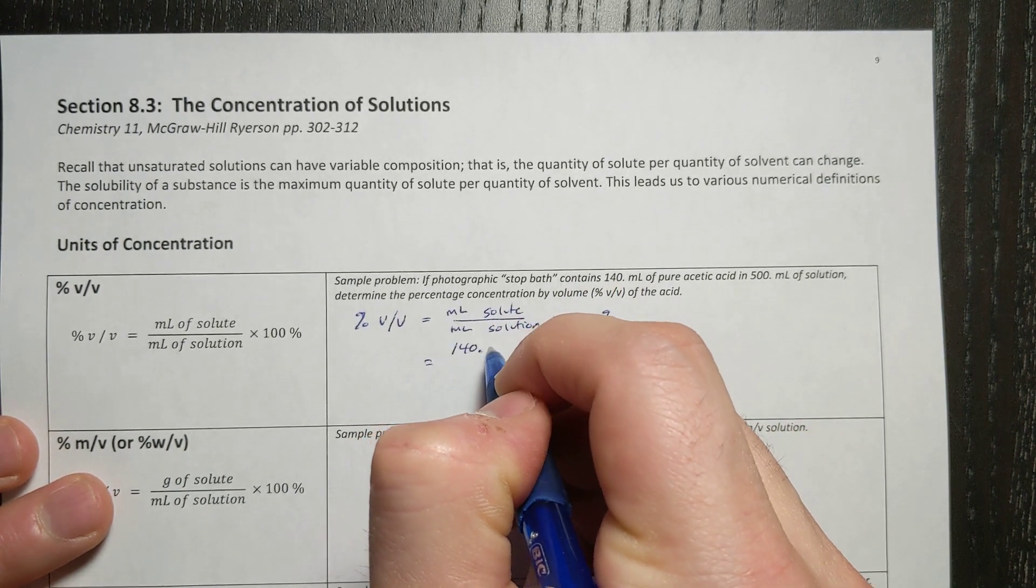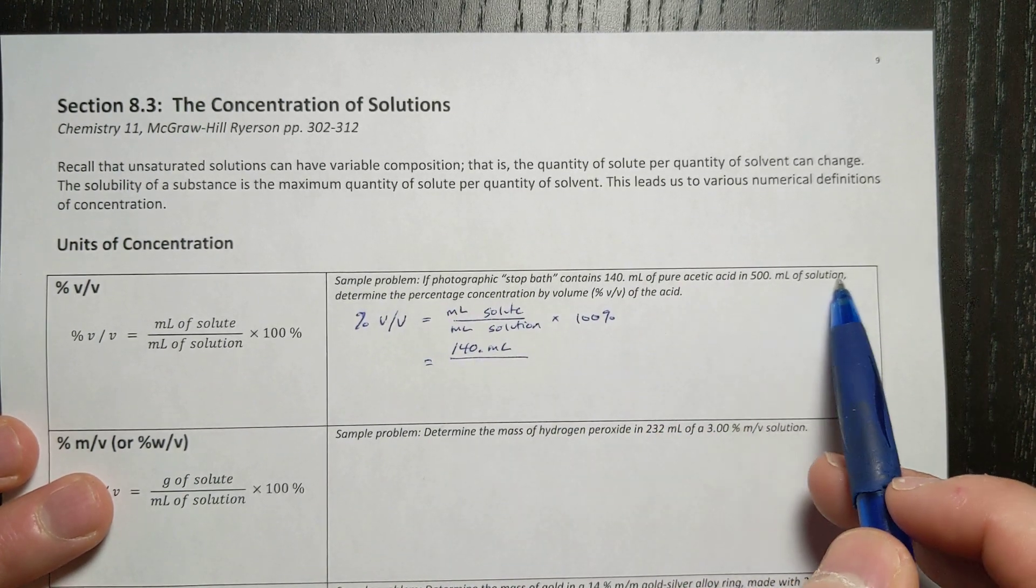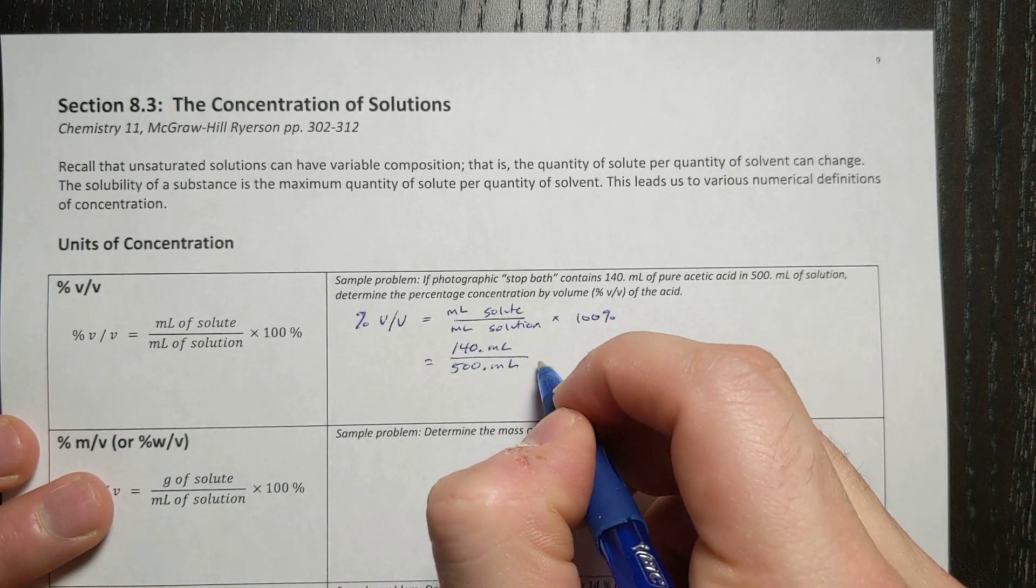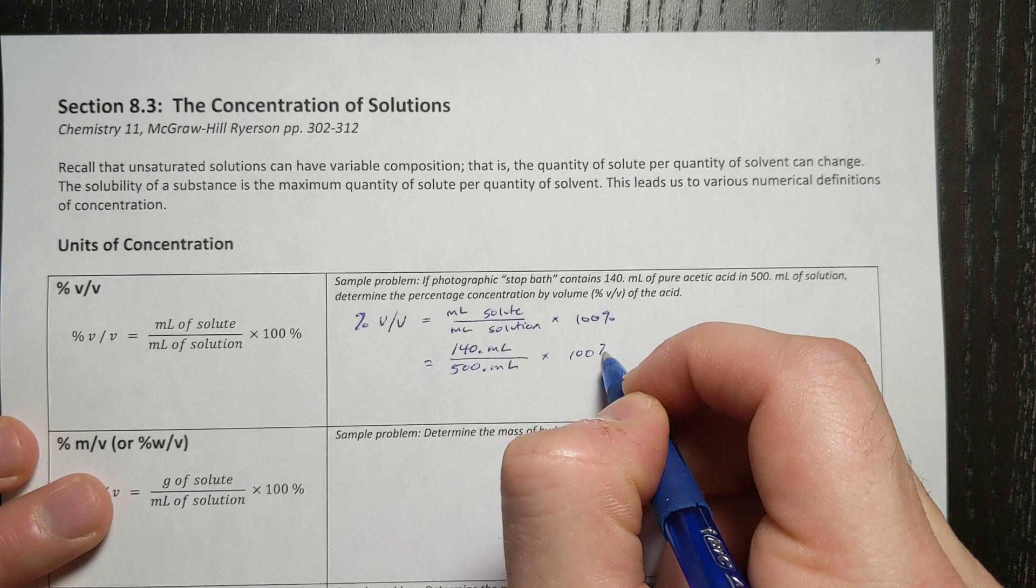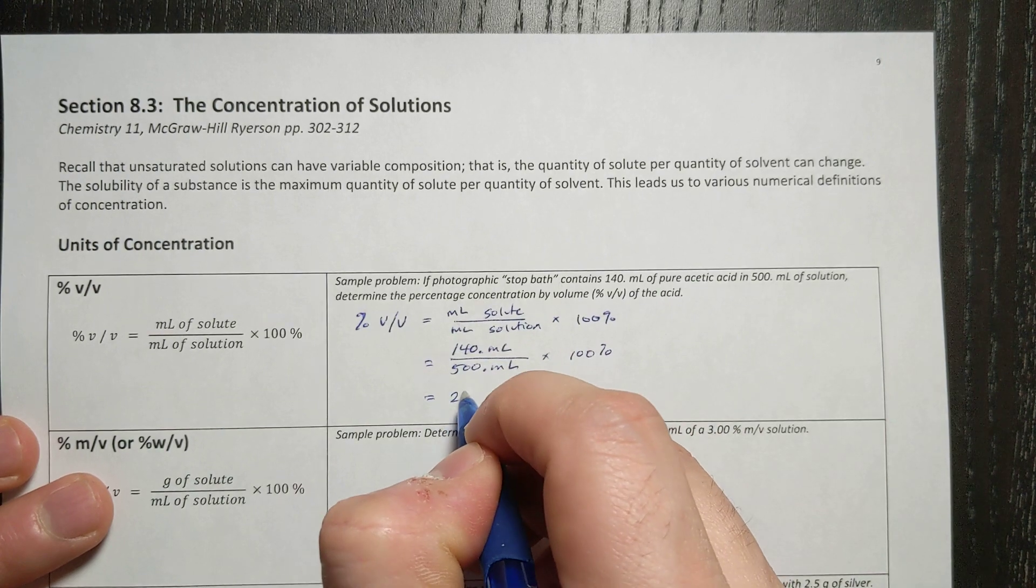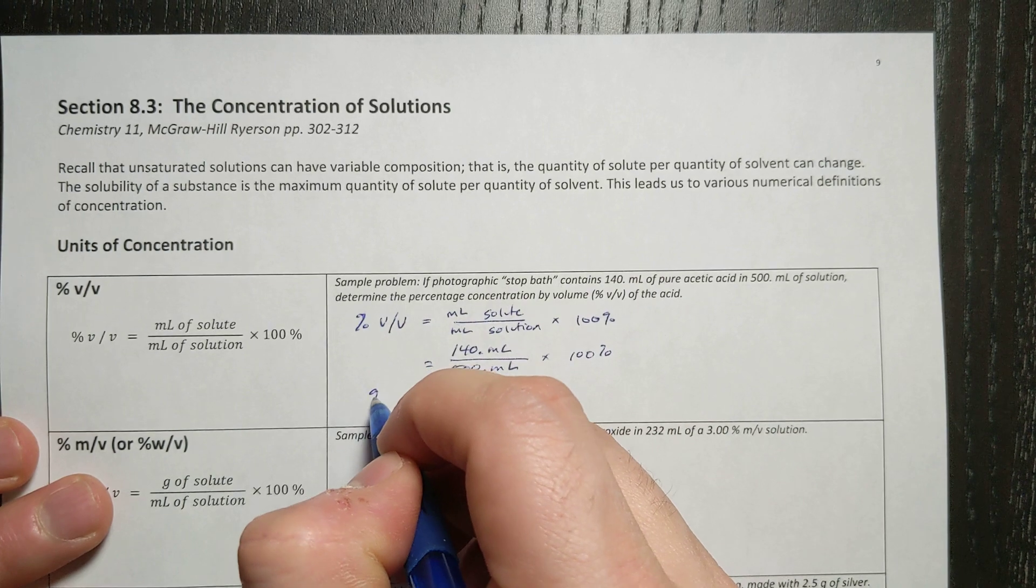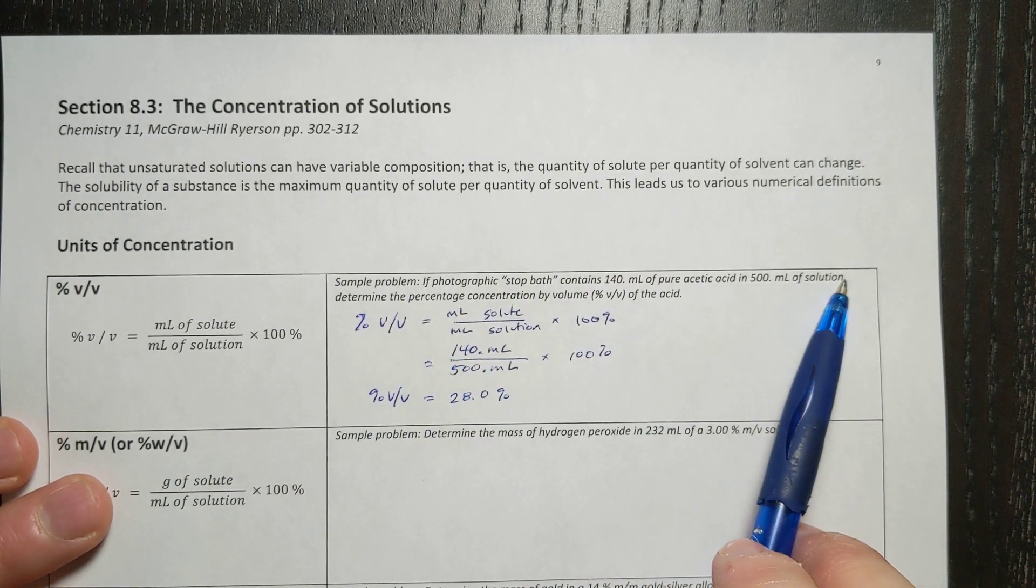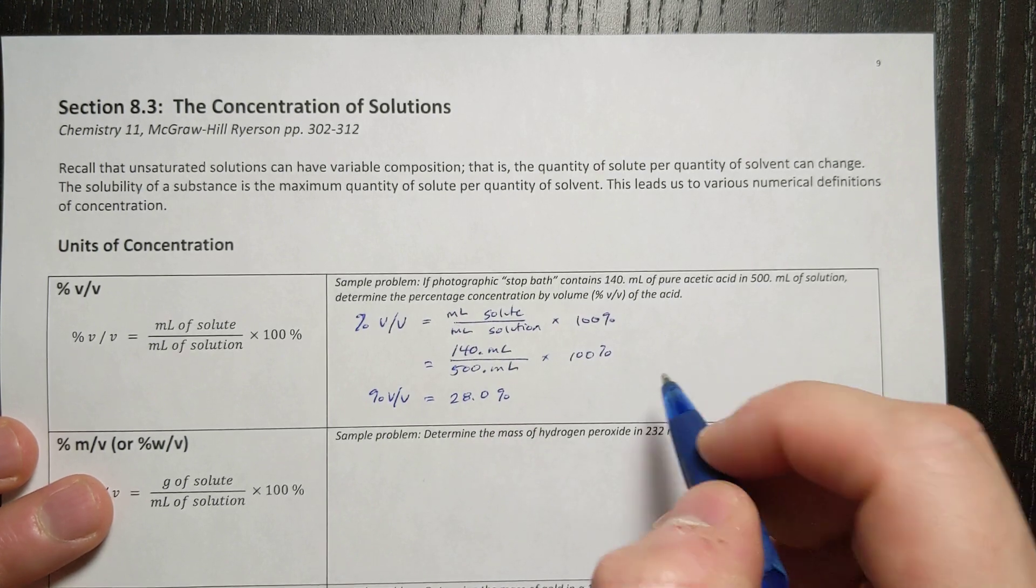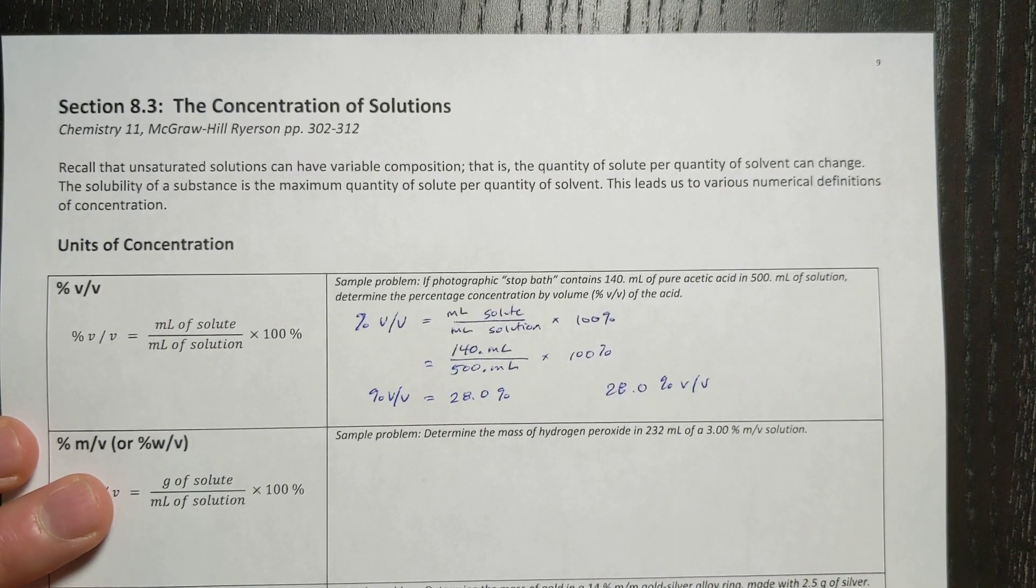500 milliliters of solution, 500 milliliters times 100%. Three significant figures, three significant figures. My final answer is 28.0%. So the percent volume per volume of acetic acid in solution is 28.0%. Or we would say even 28.0% volume per volume.